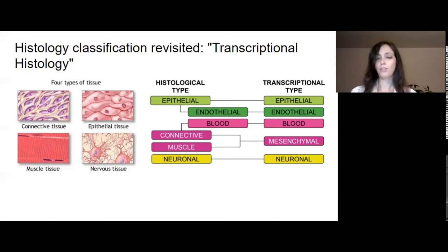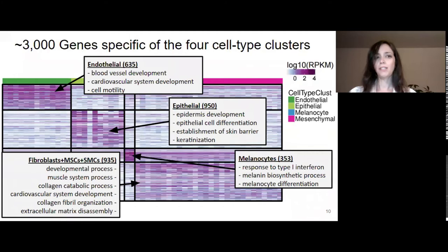We performed differential gene expression analysis on the cells for which we had RNA sequencing data and identified about 3,000 cell type-specific genes. You can see the breakdown in this heatmap. The number of genes is in parentheses. And you can see that these genes are enriched for gene ontology terms that are descriptive of the related cell type. For example, endothelial-specific genes are enriched for blood vessel development, and epithelial-specific genes are enriched for epithelial cell differentiation.